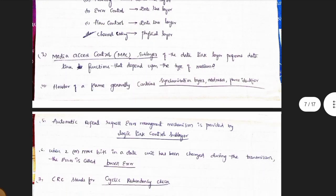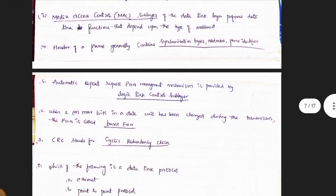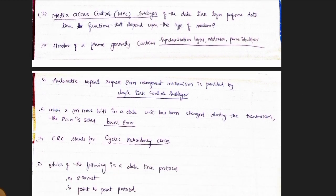4th one: the header of the frame generally contains synchronization of data bytes, addresses, and frame identifier. 5th one: automatic repeat request — error management mechanism is provided by the logical link control sublayer.